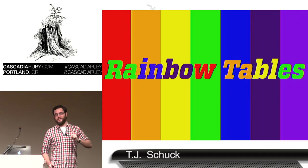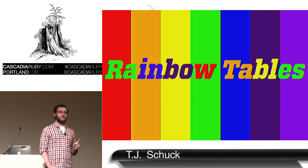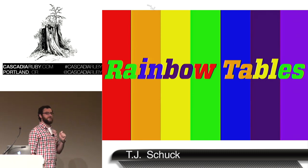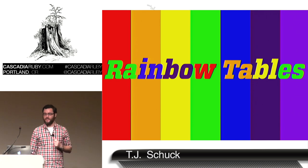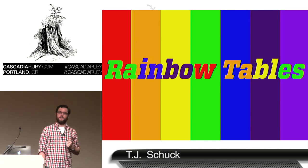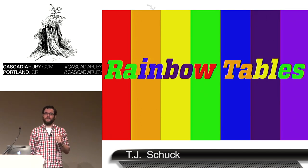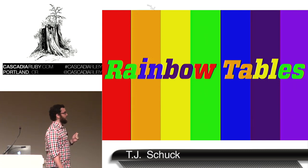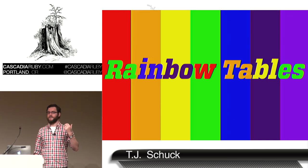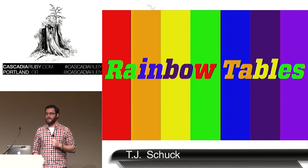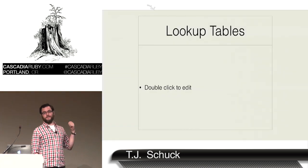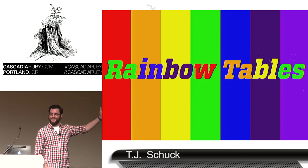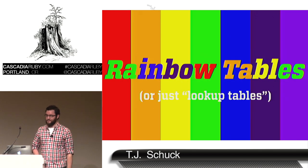We're not actually going to be talking about rainbow tables specifically — we are technically going to be talking about lookup tables, which are kind of a generalization and the first step of rainbow tables. Rainbow tables are a little bit more complicated, but the understanding you'll get is effectively the same: they have the same consequences and the same ways to mitigate them.